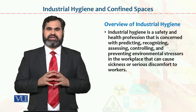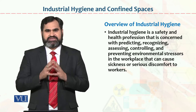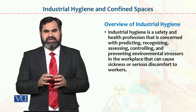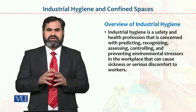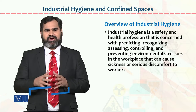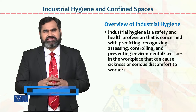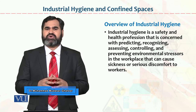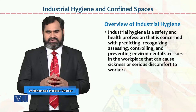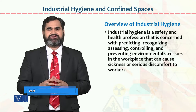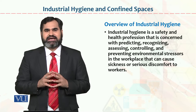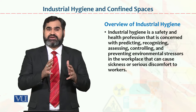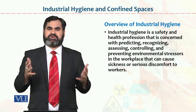Textile industry का example लेते हैं. Textile industry में cutting, stitching, dyeing, knitting, weaving, packaging, finishing — यह तमाम processes हैं. यह सारे processes textile के processes हैं, इसलिए इसको हम लोग textile industry बोलते हैं. Industrial Hygiene का मतलब है कि organization के अंदर, industry के अंदर, free from germs environment हो.